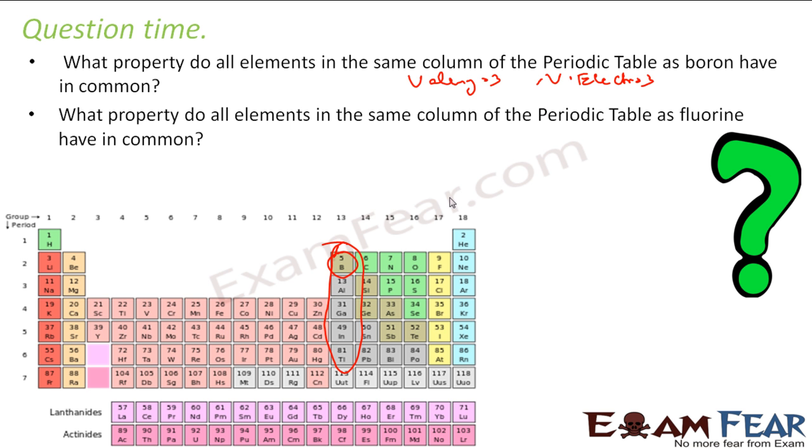What properties do all the elements in the same column as fluorine have? So if you take the fluorine one, for all these my valence electron is seven. All these are seven. You see fluorine is 2, 7 which is 9. This is 2, 8, 7. Each and every element in this group has valence electron of seven and valence of one. This is the common thing they have.